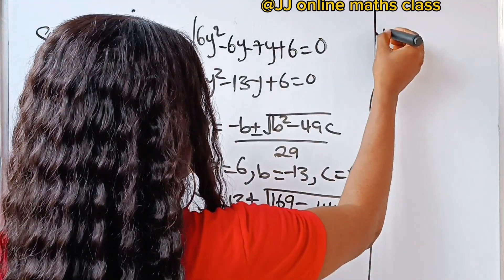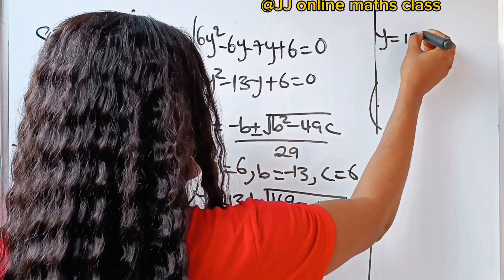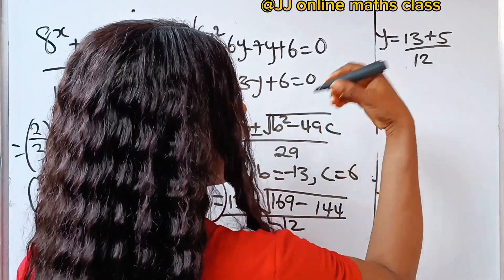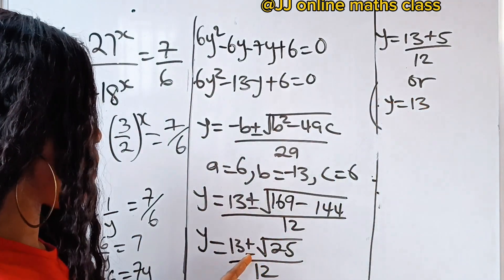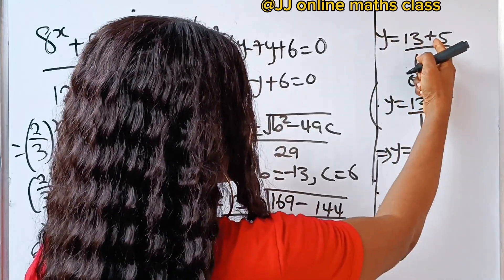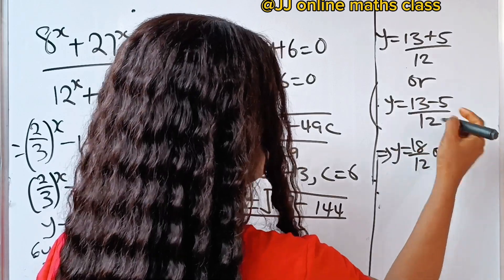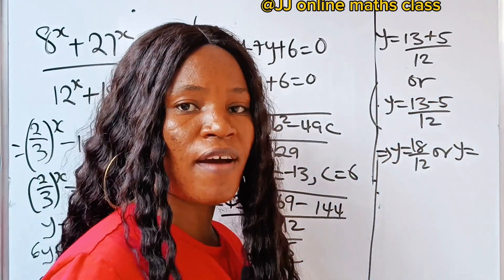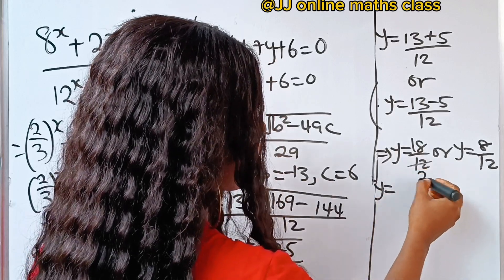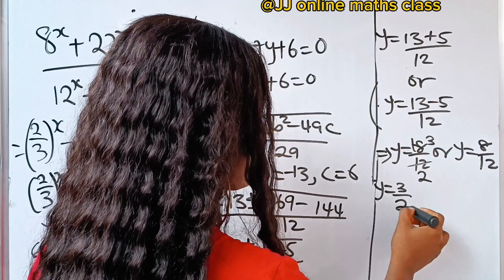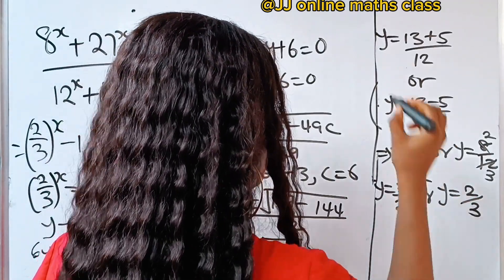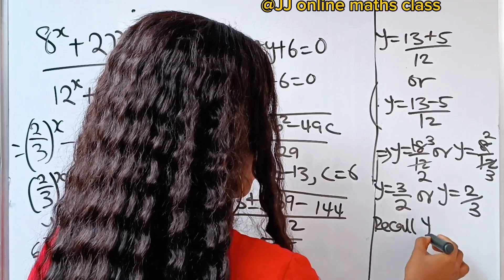We get two values of y. The first is y = (13 + 5) / 12 = 18/12 = 3/2. The second is y = (13 − 5) / 12 = 8/12 = 2/3.